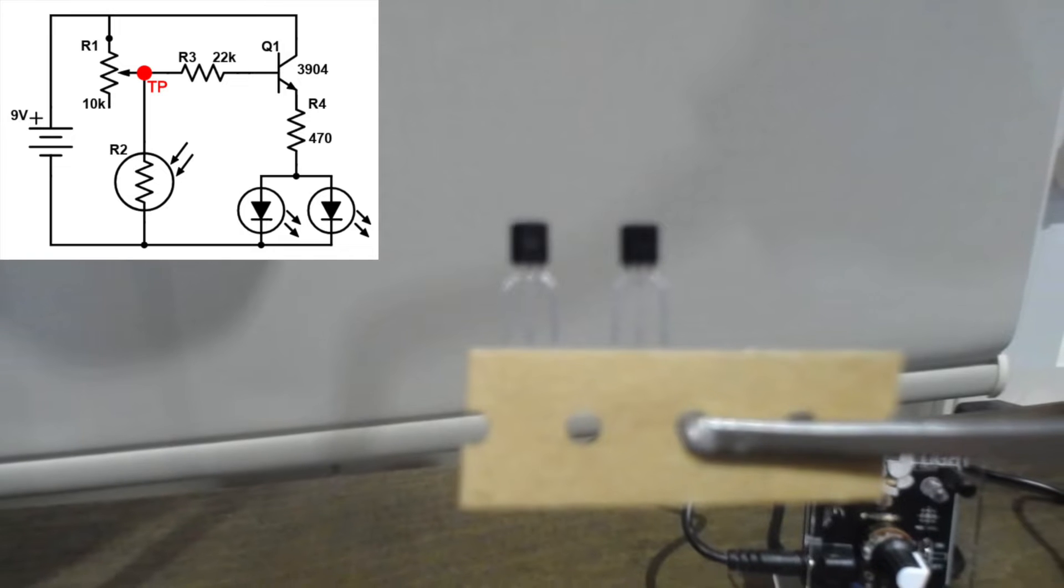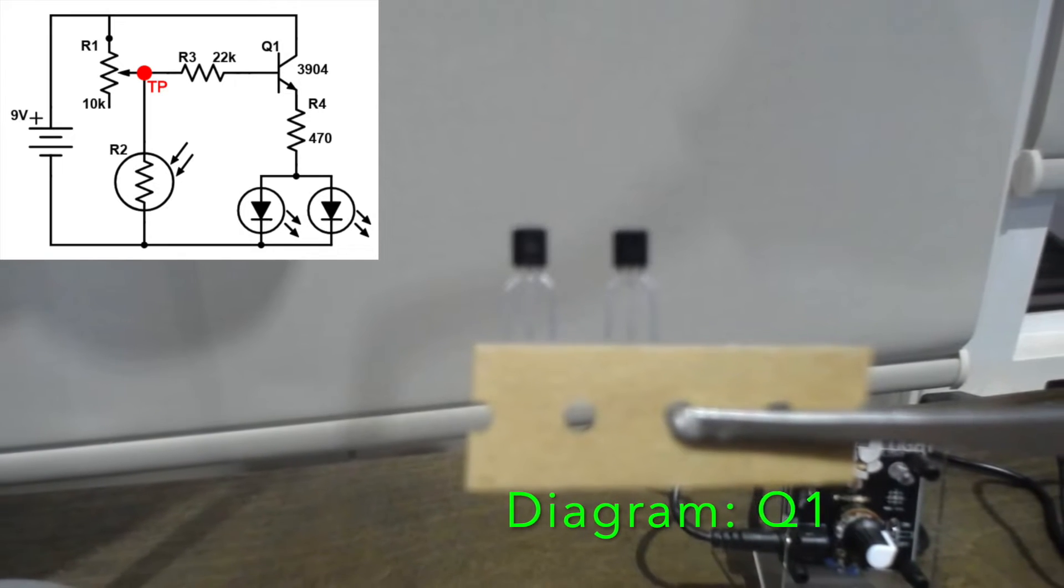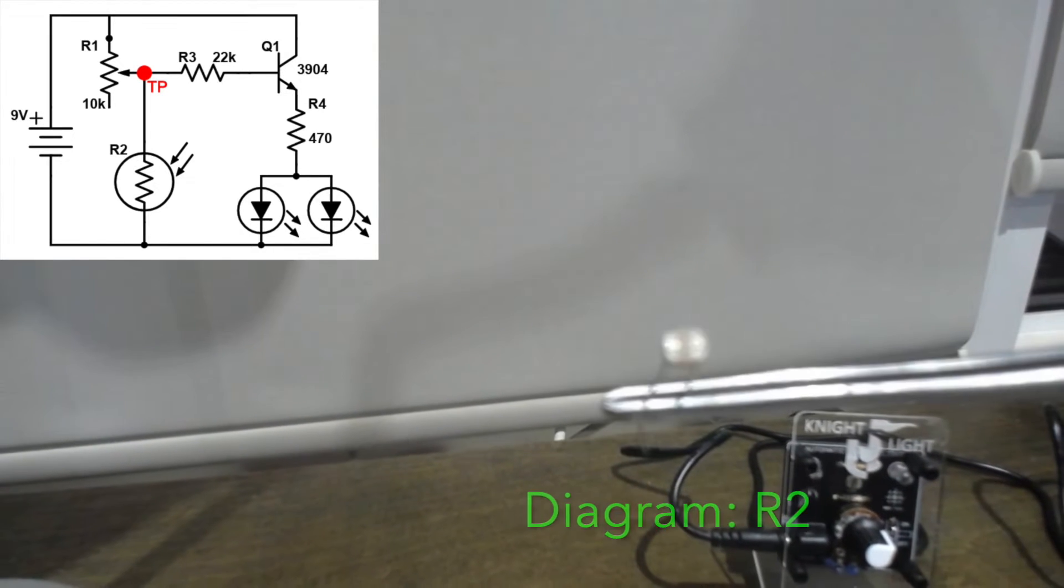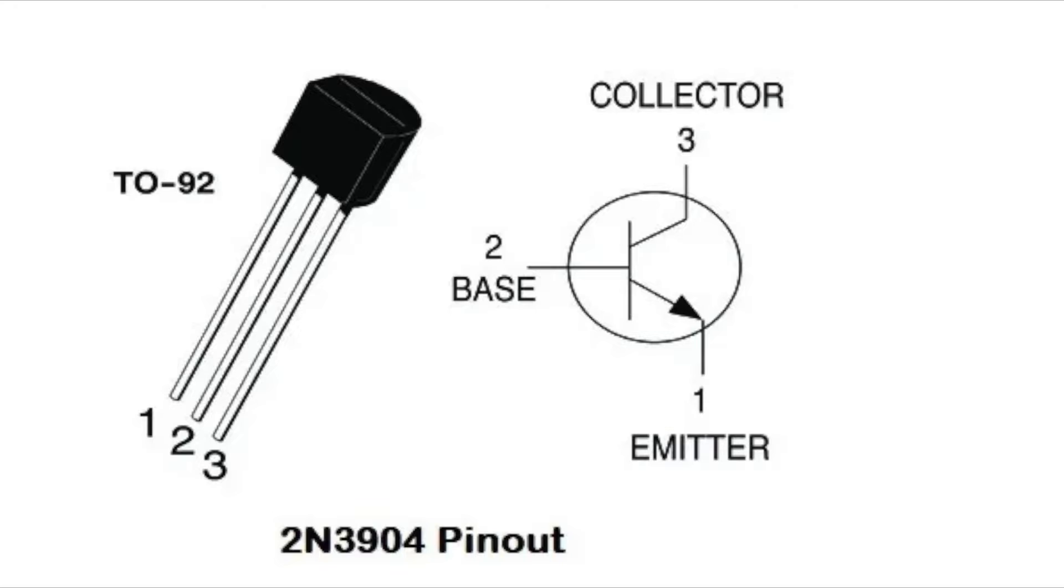The main components of this circuit are the 2N3904 transistor, the potentiometer, and the light-dependent resistor. The transistor has three pins: the emitter, the base, and the collector.